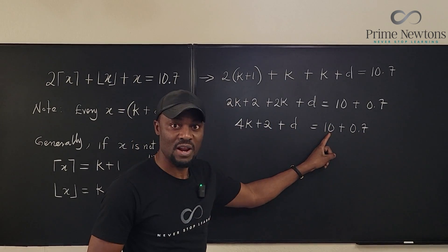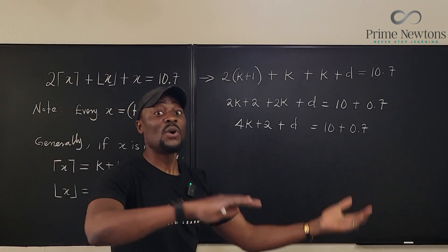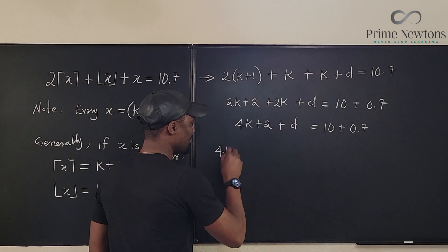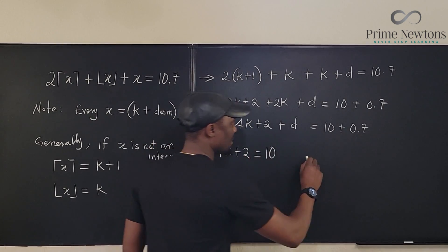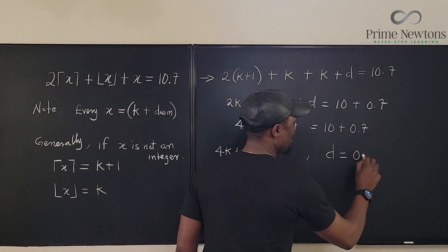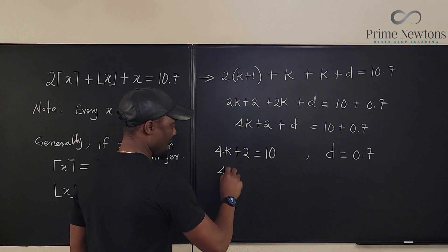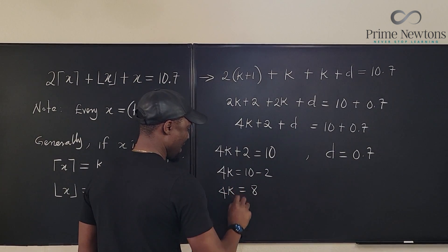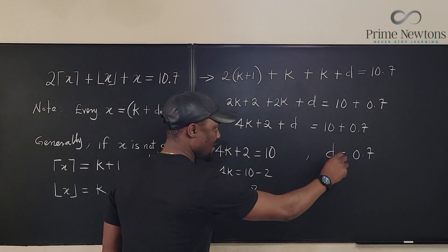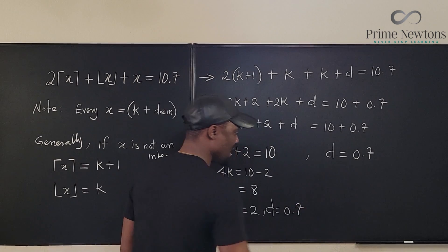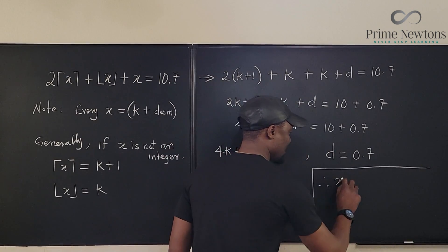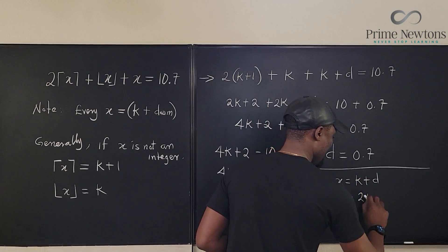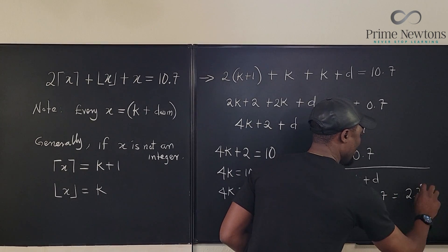So we're going to say 4K plus 2 equals 10 and D equals 0.7. Let's solve this: 4K equals 10 minus 2, which equals 8, so K equals 2. And we have D equals 0.7. Therefore, X equals K plus D, which equals 2 plus 0.7, which is 2.7. This is the number that generated this equation.